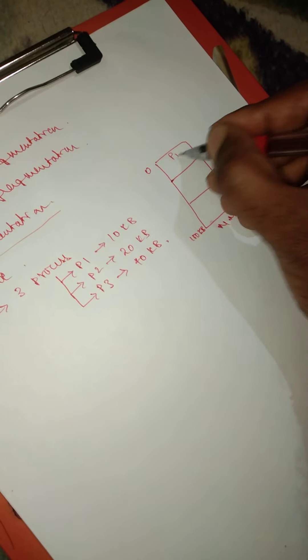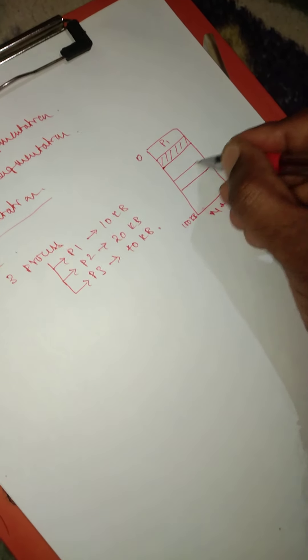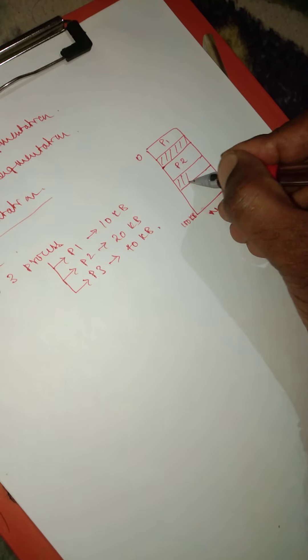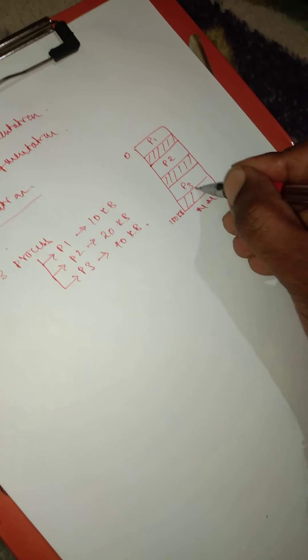P1 is allotted this space and this space is free. At the same time, P2 is allotted here and this space is free, and P3 is allotted here and this space is free.